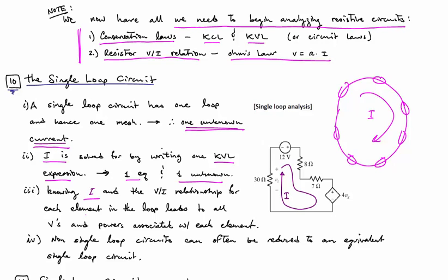We solve for the current, and then given that we have the resistance or terminal characteristics, the VI relationship for each element in the loop, we can use that current to compute the voltage.